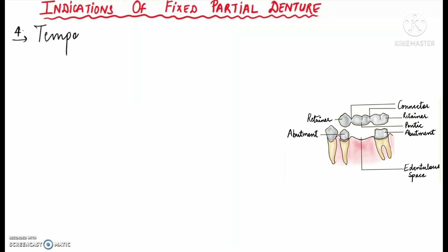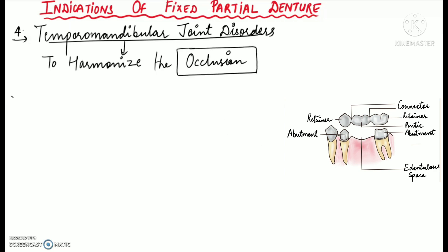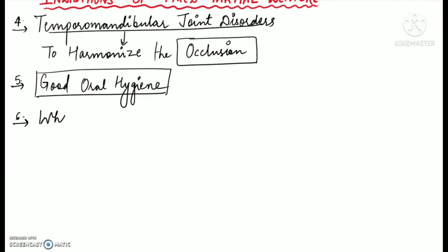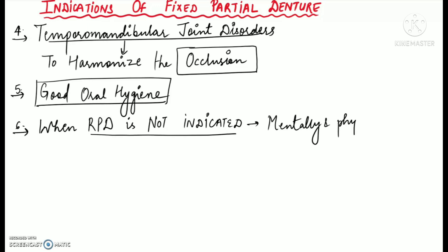FPD can also be indicated in patients with temporomandibular joint disorders in order to harmonize the dental occlusion. FPD is generally indicated in patients who are motivated enough for maintaining good oral hygiene. When a removable prosthesis is not indicated — as in mentally or physically challenged patients — we can go with the FPD.